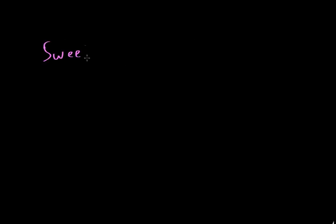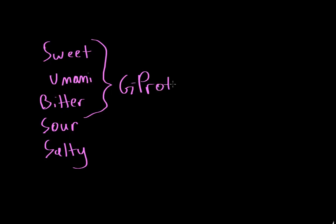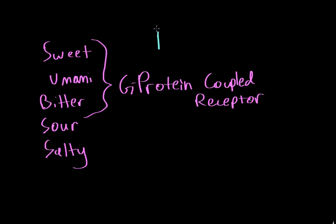We have five different tastes: sweet, umami, bitter, sour, and salty. The top three taste cells — sweet, umami, and bitter — have similar receptors known as G-protein coupled receptors.